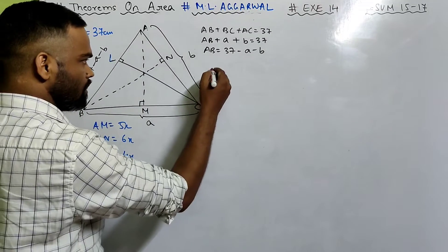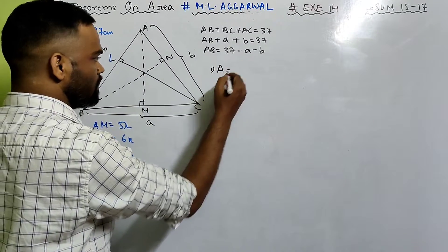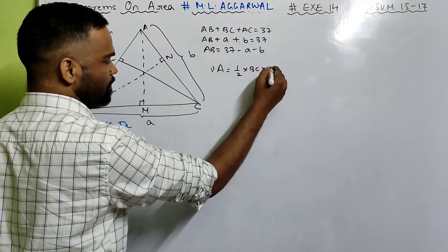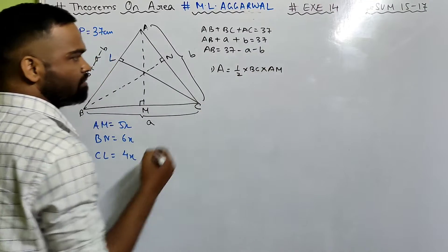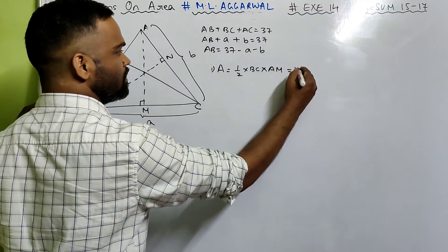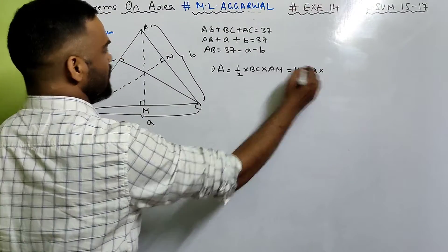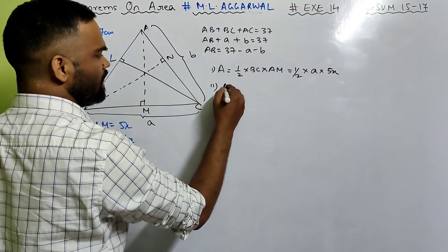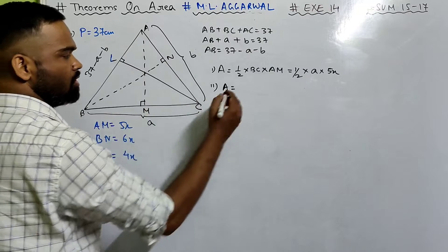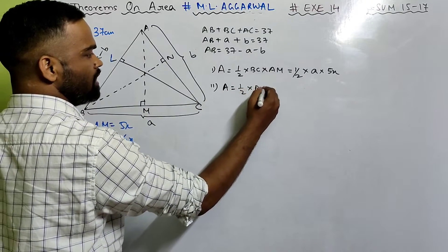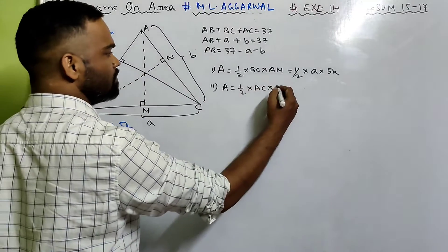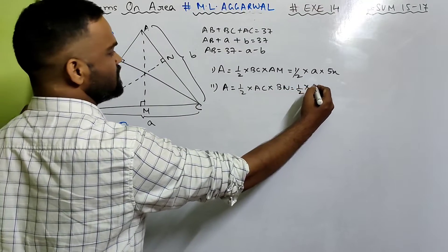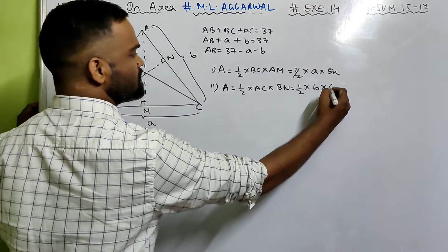Now, if I take BC as the base, area equals half times base times altitude. So half times a times AM, which is 5X. Again, if I take AC as the base, area equals half times AC times BN. Substituting: half times b times 6X. Again, if I take AB as the base, area equals half times AB times CL, which is half times (37 minus a minus b) times 4X.